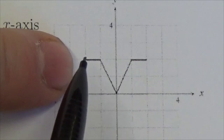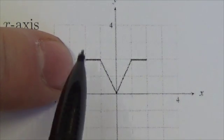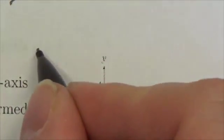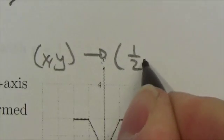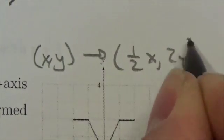I'm going to multiply the y-coordinate by 2, and then I'm going to multiply the x-coordinate, in this case negative 2, by a half. So what we get here is x, y is going to become one-half x, comma 2y.